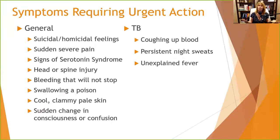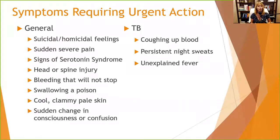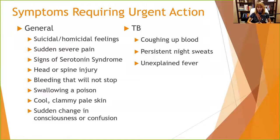Symptoms requiring urgent action include suicidal or homicidal feelings, sudden severe pain, signs of serotonin syndrome — remember CAN: cognitive, autonomic, and neurological symptoms — and head or spine injury. If a client falls in your clinic or tells you they fell at work and starts acting confused or agitated, they may have a head injury and need referral to a physician. Bleeding that won't stop, swallowing a poison, and cool, clammy, pale skin are also urgent signs. Sudden changes in consciousness or confusion could have many causes, none of which we as non-prescribing, non-medical professionals can handle — we need to refer out.